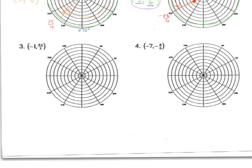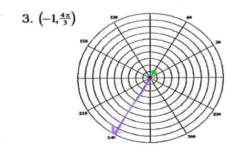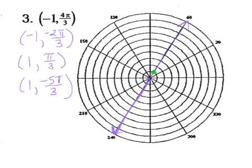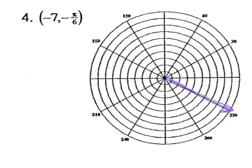Pause the video and try the next two on your own, then restart to check your answers. For the first one, you should have started at angle 4π/3 and went backwards 1 for your coordinate. The remaining three points are (−1, −2π/3), (1, π/3), and (1, −5π/3). For number 4, start at angle negative π/6 and go backwards 7 since the radius is negative 7 — count out 1, 2, 3, 4, 5, 6, 7 right there.